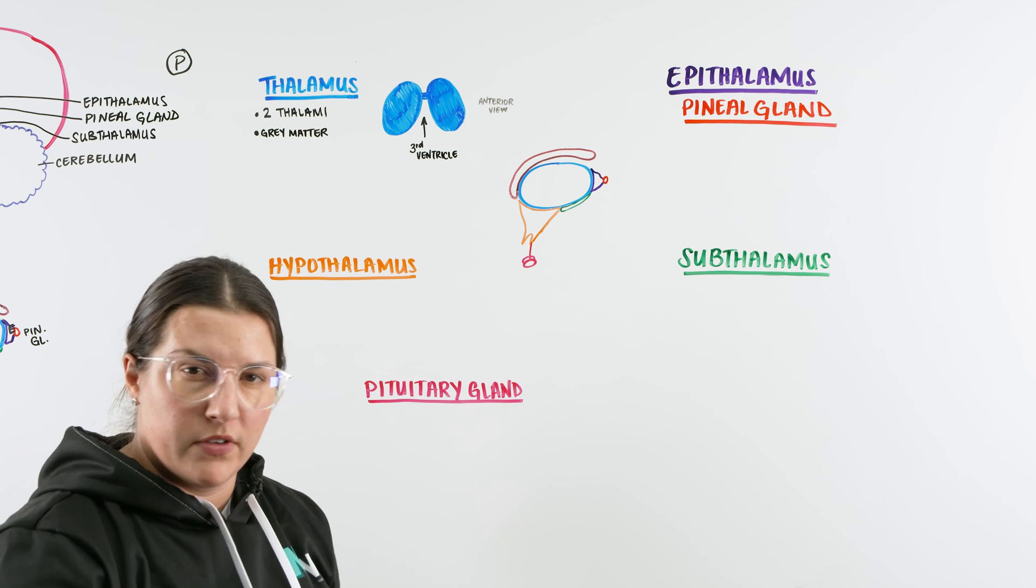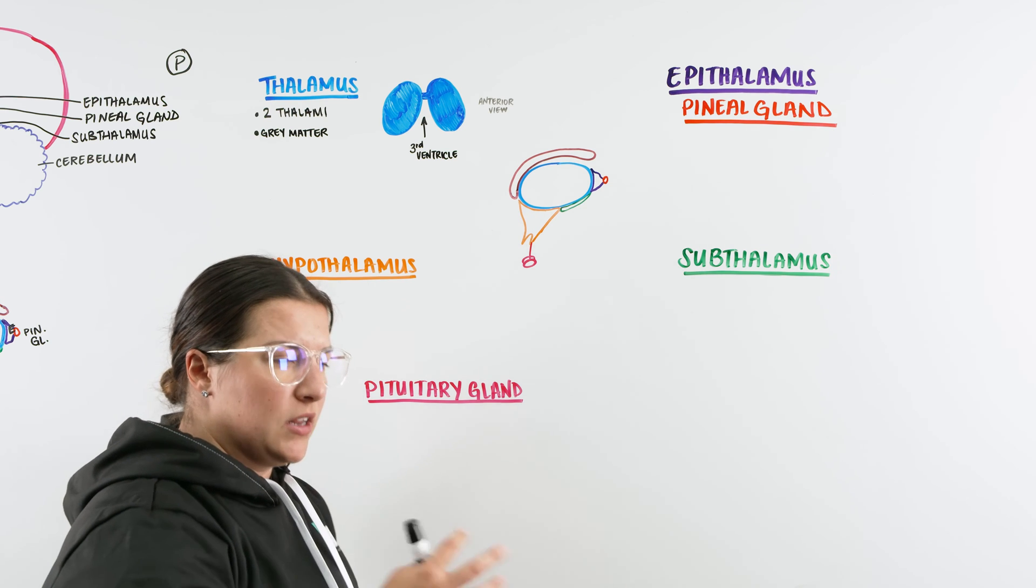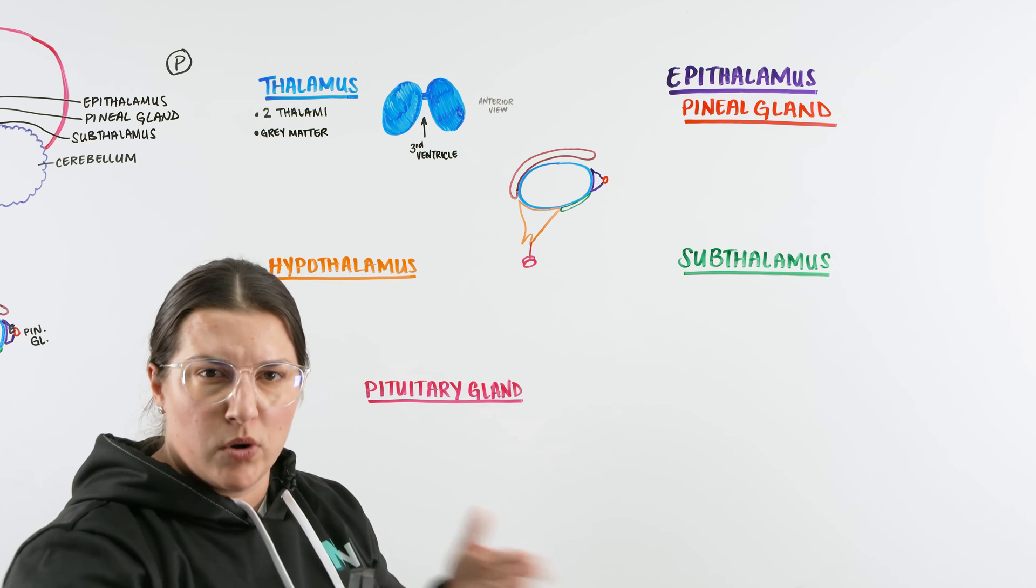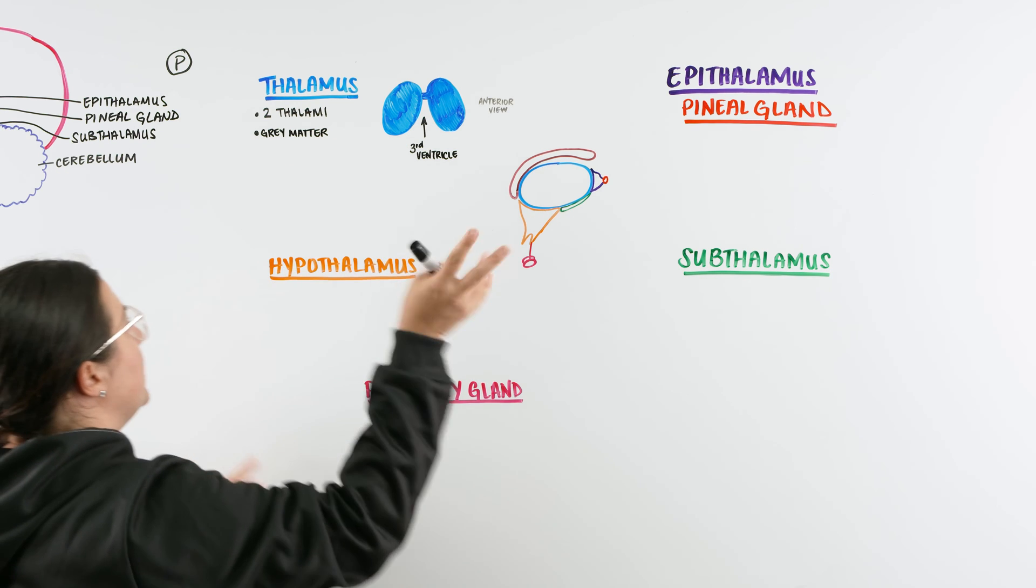So why does the thalamus need all this dense nuclei for communication? It's because the thalamus is known also as the relay station or the area in which we take messages in and then we send them out. So I always like to think of it as more of like a post office. We're taking a lot of information and a lot of letters in and we're going to send them to where they need to go. So the thalamus works as our relay station.